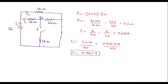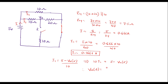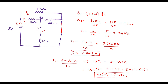Therefore, we can say that va(0-) satisfies: i1 equals (5 minus va(0-)) divided by 10, or equivalently, 10 times i1 equals 5 minus 10 times i1. Substituting i1 equals 0.1666: va(0-) equals 5 minus 10 times 0.1666. Solving this, we get va(0-) equals 3.334 volts. This is the voltage va at zero minus when the circuit was in steady state.